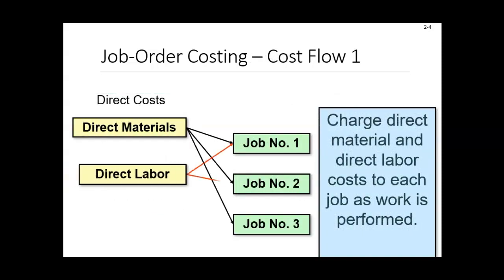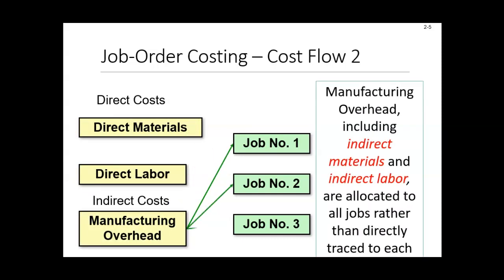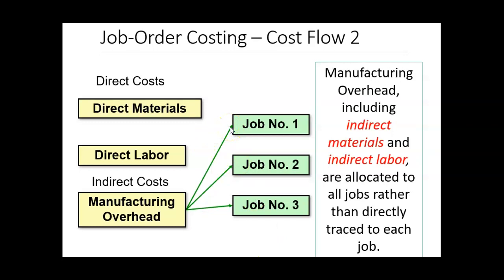We have material costs, labor costs, and overhead costs. With a job order costing system, we figure out how much material, labor, and overhead costs should be assigned to job number one, job number two, and job number three. Manufacturing overhead includes any indirect material costs, indirect labor costs, and other manufacturing costs except for direct materials and direct labor.